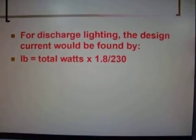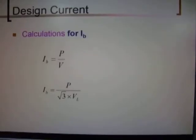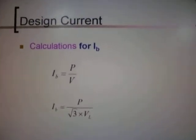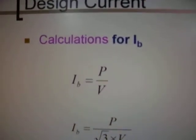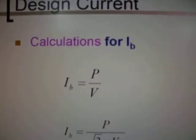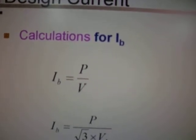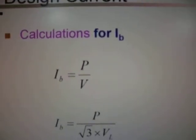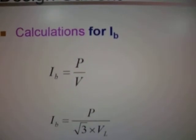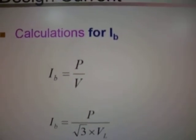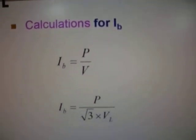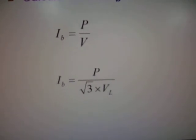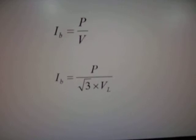Now here we look at the design current. Here we have the calculation for IB: IB equals P over V, where P is the power and V is voltage. And down here we have IB equals P over the square root of 3 times V.